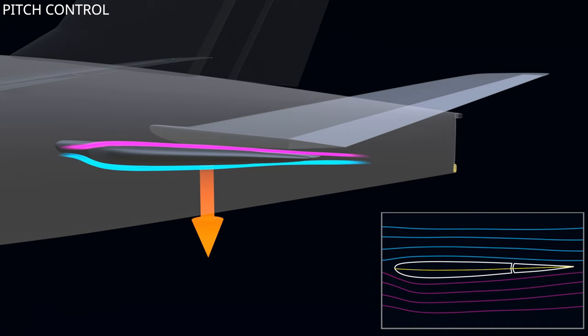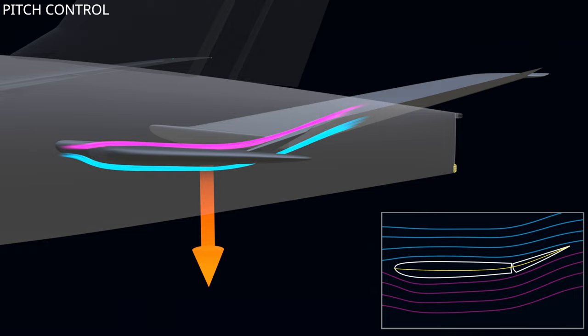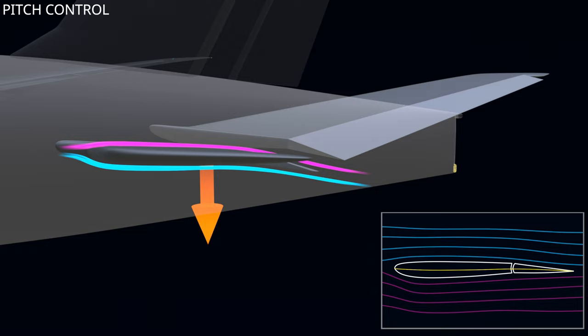The tailplane aerofoil has a negative camber, which turns the airflow and provides negative lift. The aircraft's pitch attitude is controlled by varying the tailplane force. The combination of the trimmable horizontal stabilizer and the elevator provides pitch control. When the elevator deflects up, it changes the camber to increase the tail-down force. When it deflects down, it changes the camber to reduce the tail-down force.